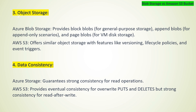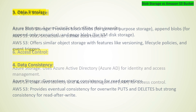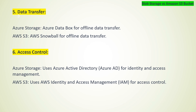Data Consistency: Azure Storage guarantees strong consistency for read operations. AWS S3 provides eventual consistency for overwrite puts and deletes, but strong consistency for read-after-write. For Data Transfer, Azure Storage uses Azure Data Box for offline data transfer, while AWS S3 uses AWS Snowball for offline data transfer.